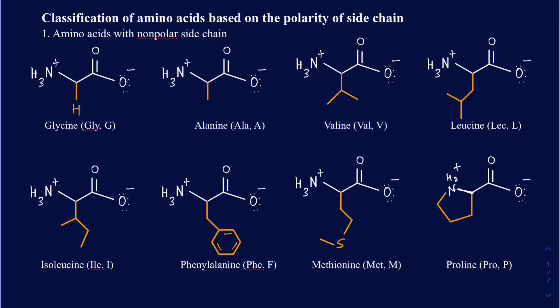In this video, we're going to be classifying amino acids based on the polarity of sidechains. In a previous video, we talked about how one amino acid differs from another one by the presence of different R-groups. In this session, we're going to be classifying different amino acids based on the polarity of the sidechains, whether they are polar, non-polar, or acidic and basic. So let's focus on the amino acids that have a non-polar sidechain.